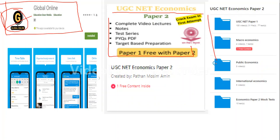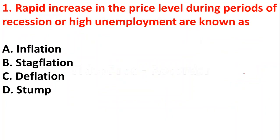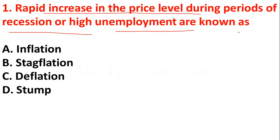The first question: rapid increase in the price level during the period of recession or high unemployment is known as — option A: inflation, option B: stagflation, option C: depletion, option D: stun.